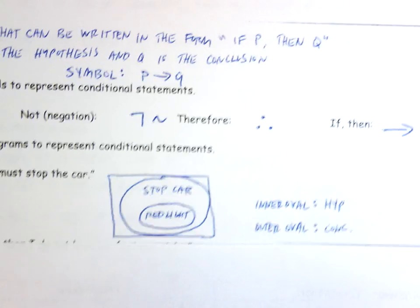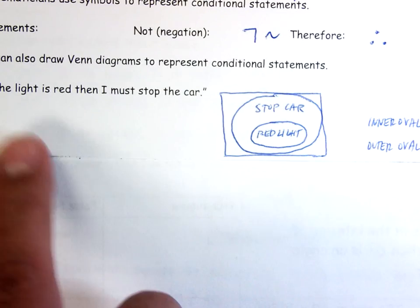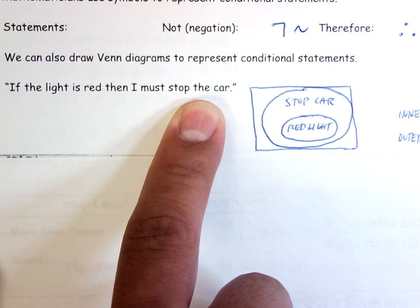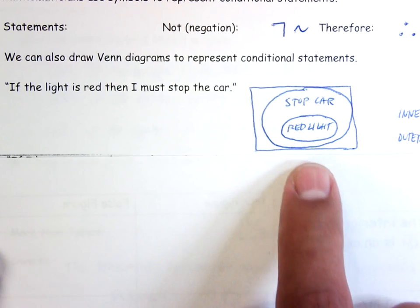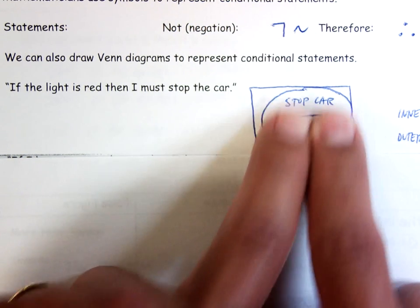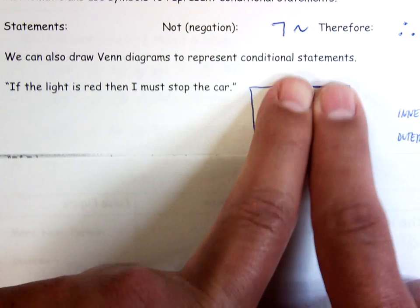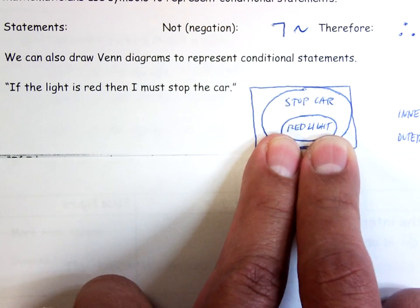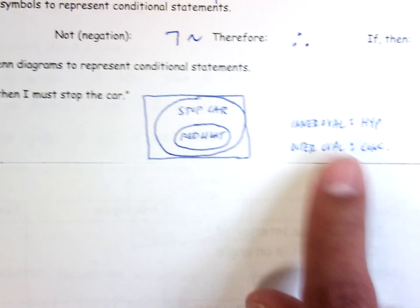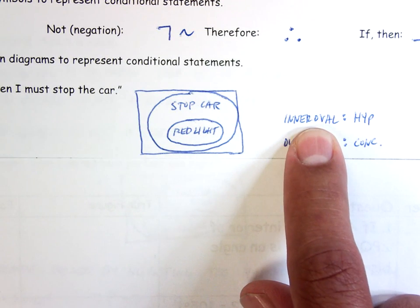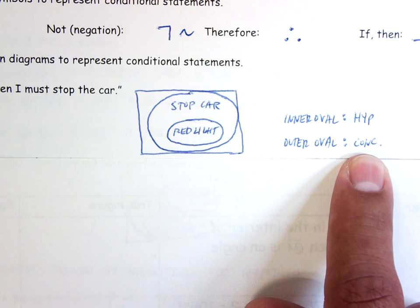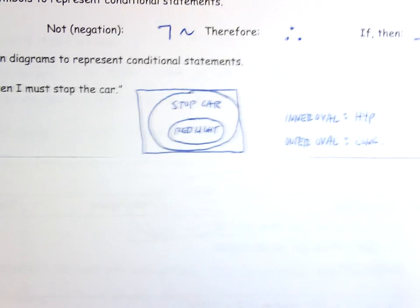We can also use Venn diagrams for conditional statements. For example: if the light is red, then I must stop the car. Every time I have a red light, I'm stopping the car — so the red light belongs inside the stopping-the-car oval. Important: in a Venn diagram, the inner oval is the hypothesis and the outer oval is the conclusion.